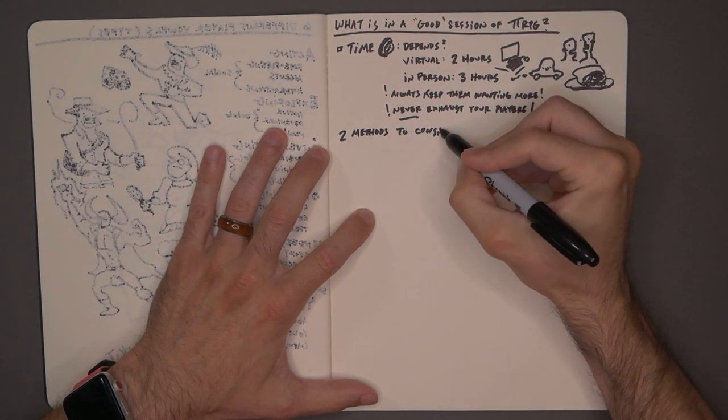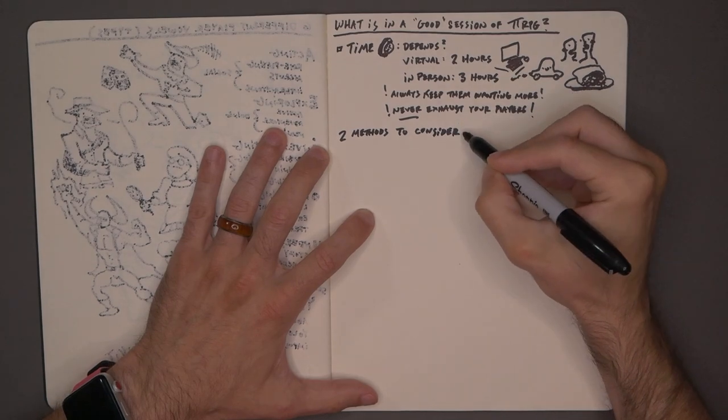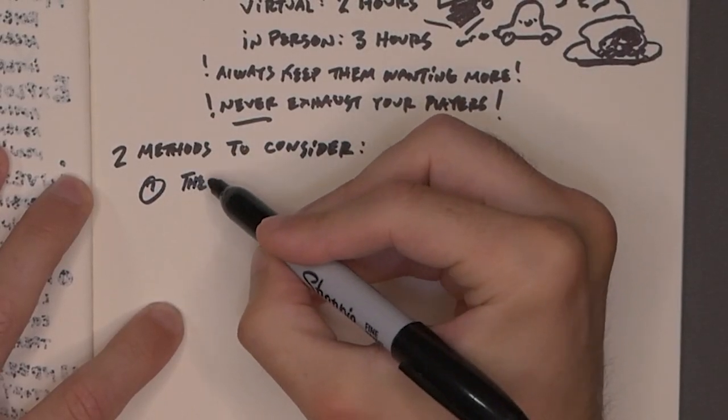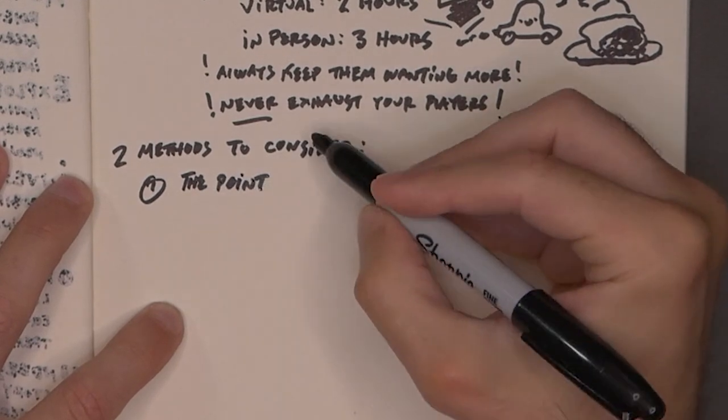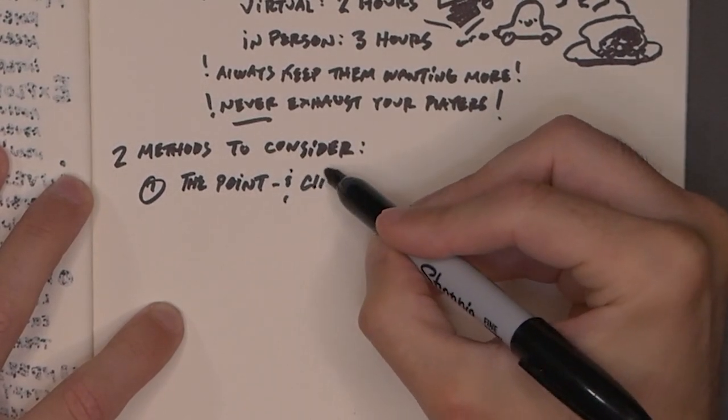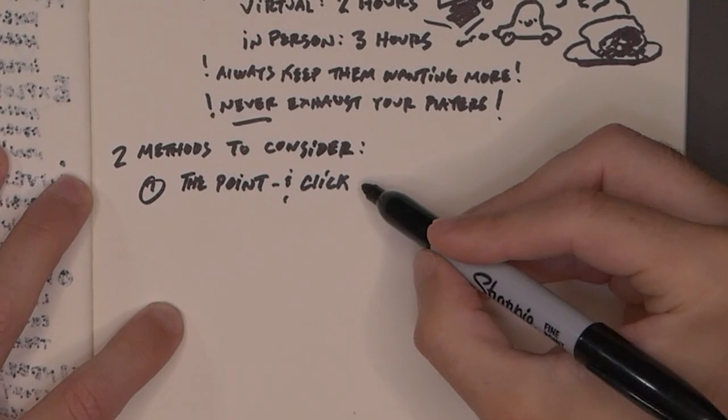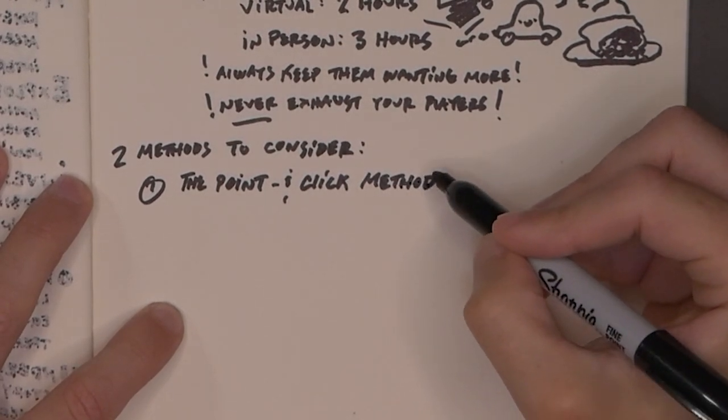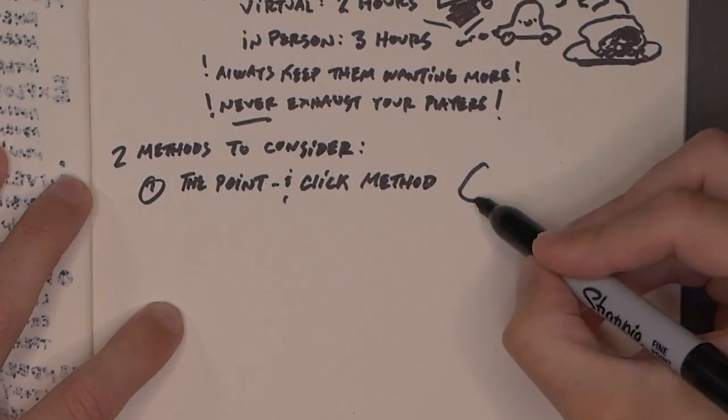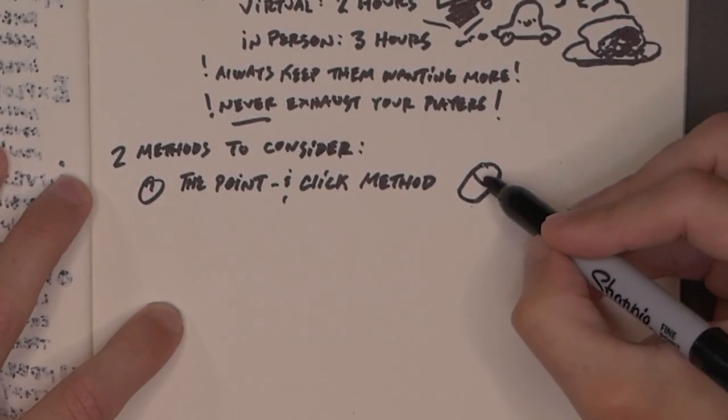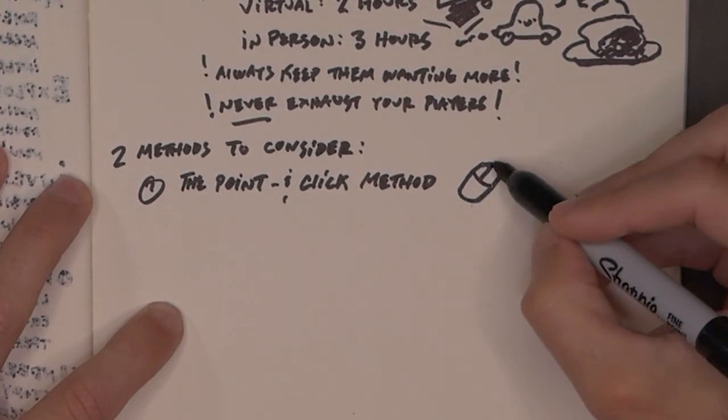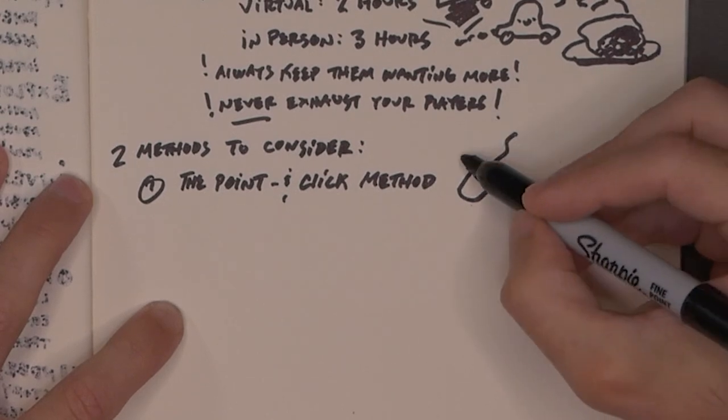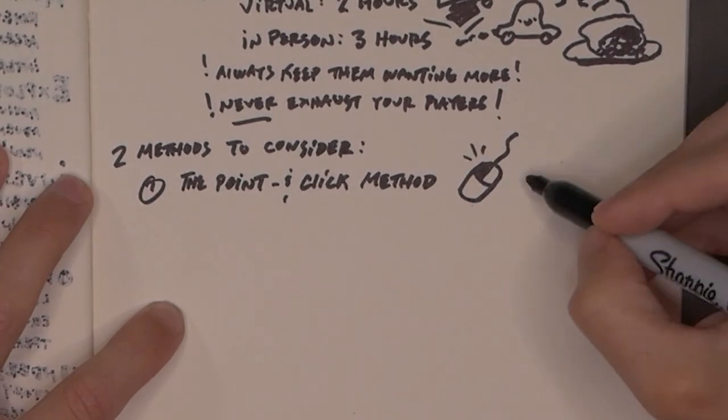You never want to overstay the game's welcome. Because again, you want people to come back for more and more. That's my very generic advice about time. Keep them wanting more. This is true also in life. But let's get to a specific checklist. There's two methods to consider. The first method I call the point and click method. The point and click method, named after those adventure games that perhaps if you're like me, you've learned to love. I'm talking King's Quest, Space Quest, So You Want to Be a Hero, Leisure Suit Larry, I'm not judging, Secret of Monkey Island. Yes, please.